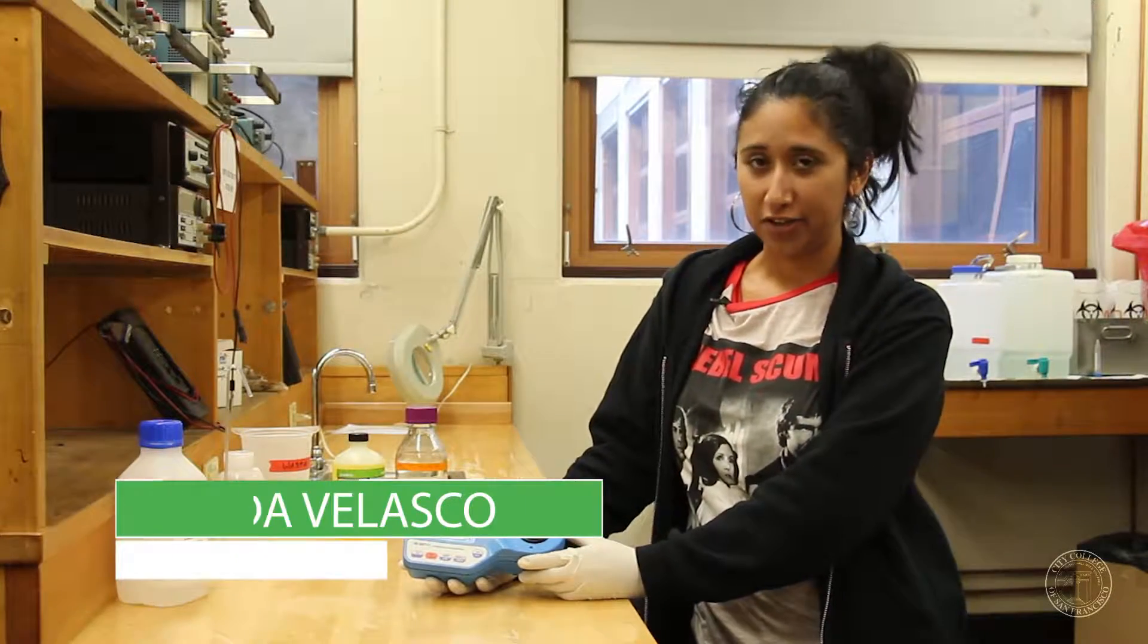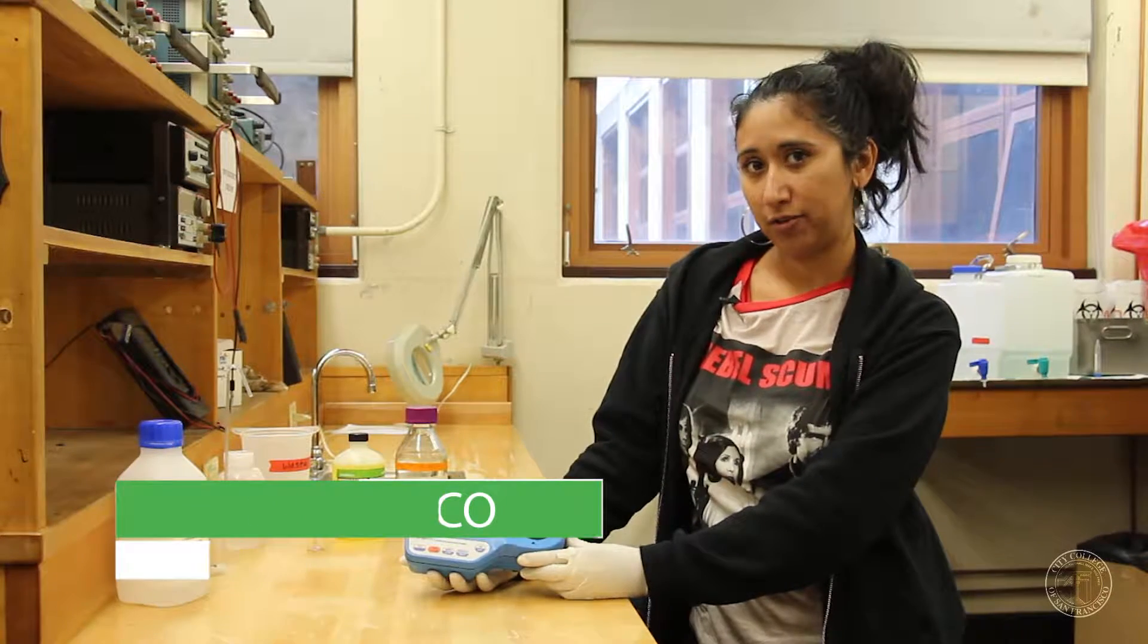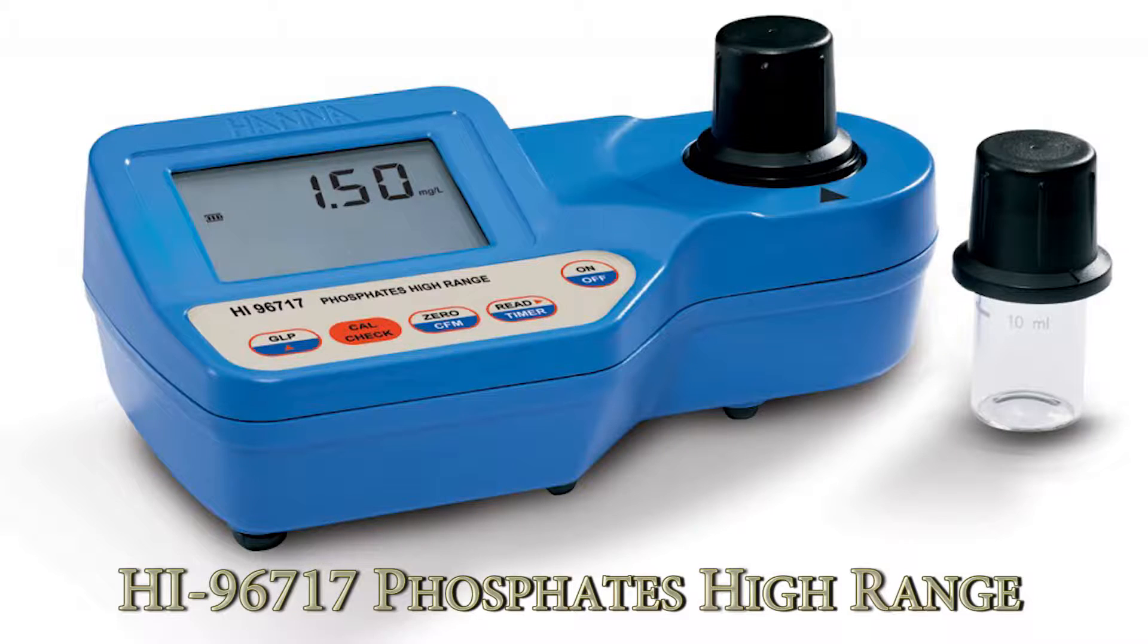Today we're going to show you how to use the HANA instrument. This is our HI-96717, which tests for phosphates in high range from 0 to 30 milligrams per liter.